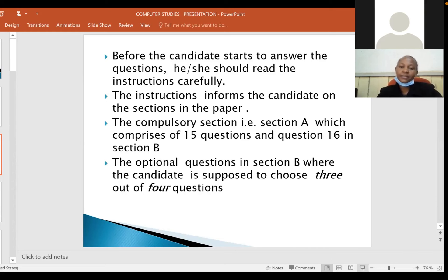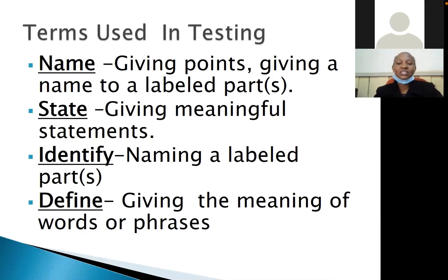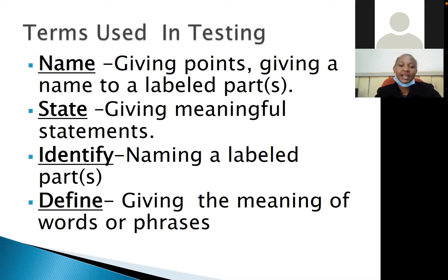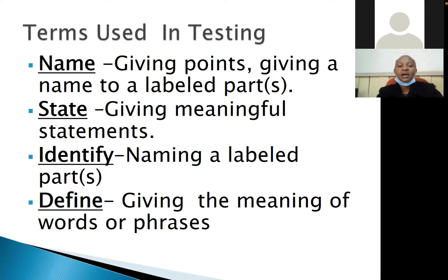Let's look at the terms that are used in testing. The first term is 'name' — in naming, you are supposed to give points, or you can be given a labeled part in a diagram. The next term is 'state' — in state, you are supposed to give meaningful statements. Another term is 'identify' — identify mostly means naming a labeled part.